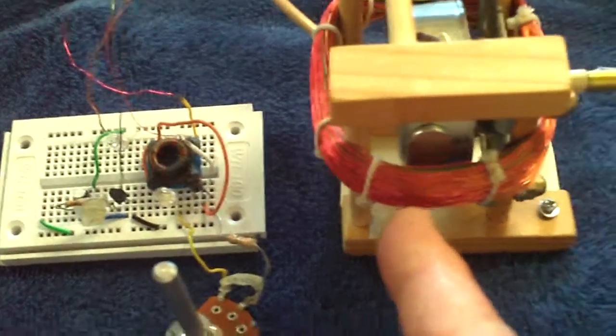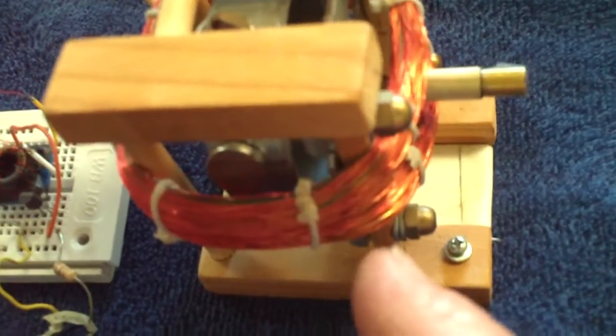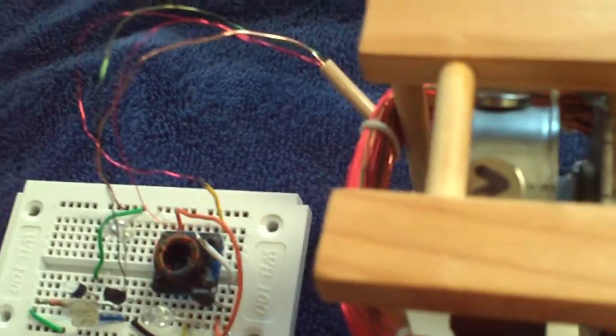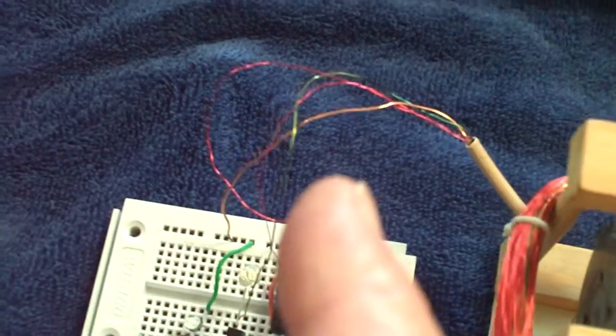This is a bifiler coil. It's not wound like a Newman motor. These wires are all wound together in one big bundle. It splits around the shaft, but it's really all one big bundle. But there are four wires that come off of it, two separate coils.